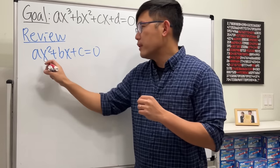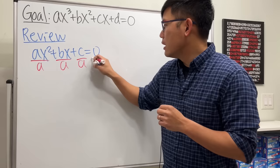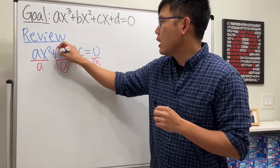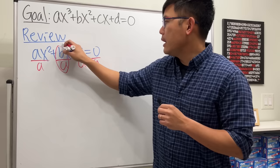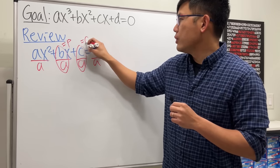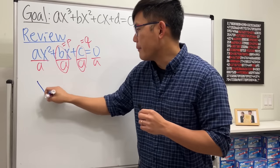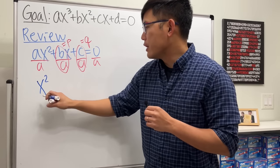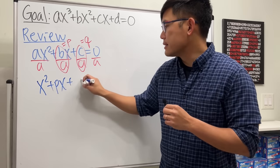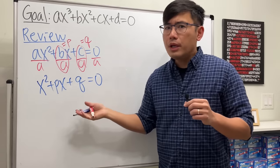What we can do first is to divide everybody by a so that the a cancels. We will call b/a as p and c/a as q. Some people will call this the pq formula. Now we are looking at x² + px + q = 0.